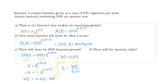I recommend leaving that as an exact answer if you need to use it further. But since this is the end of the problem, we plug it into our calculator for the decimal approximation: T ≈ 160.94. So this is measured in hours — it will take almost 161 hours for the bacteria to reach 5000.